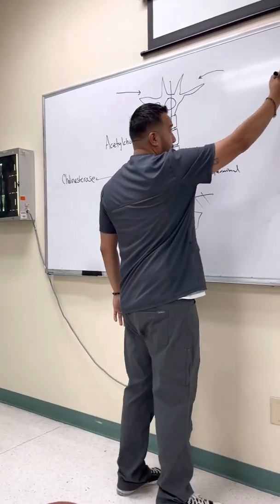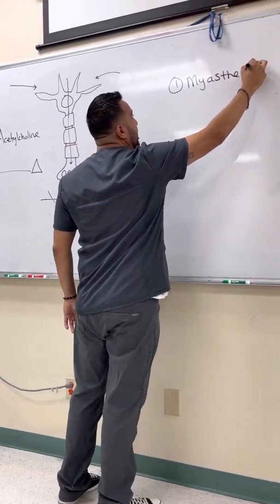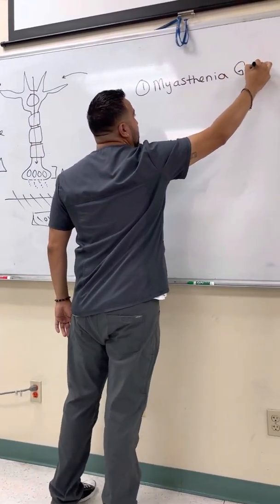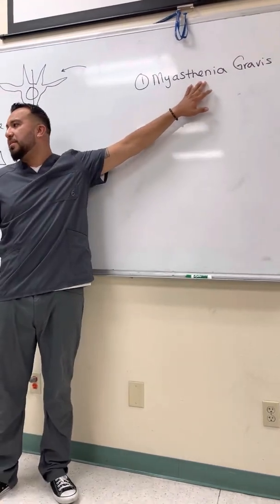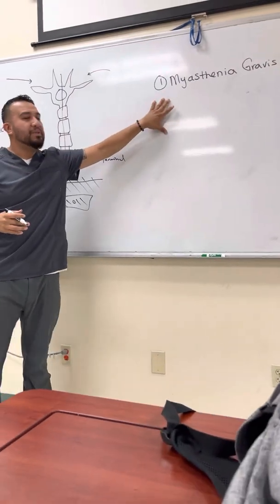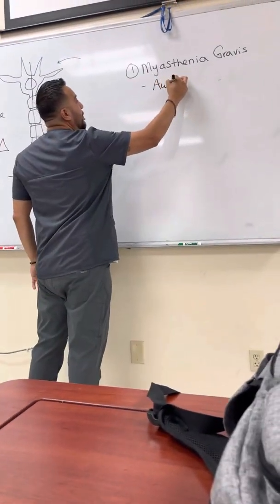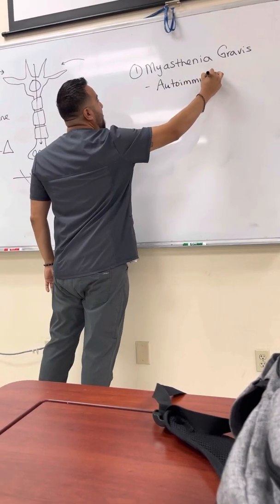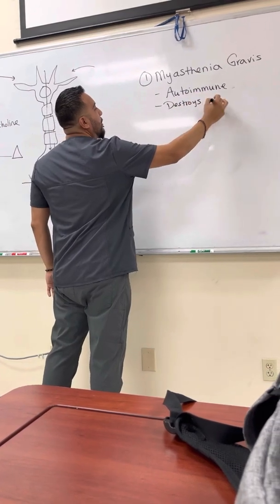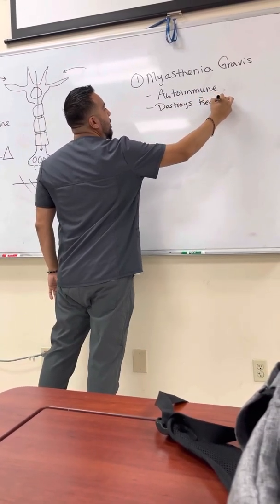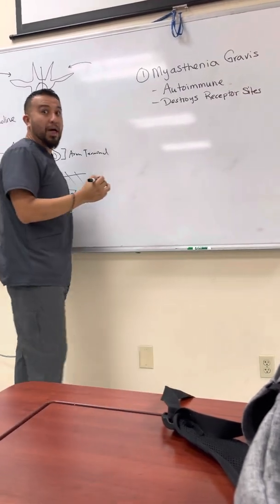You've probably heard of something called myasthenia gravis — 'thenia' means sensation. Myasthenia gravis is an autoimmune issue that destroys your receptor sites. Not all of them, but a lot of them. We need the receptor sites to catch the neurotransmitters so we can have muscle contraction.